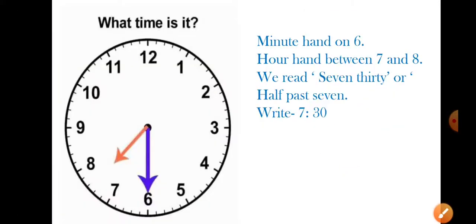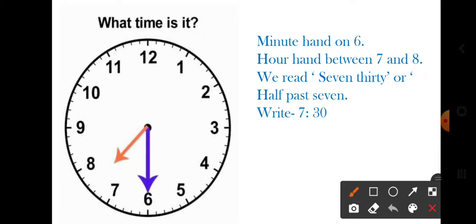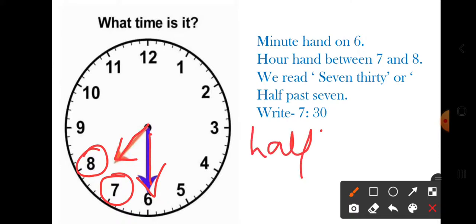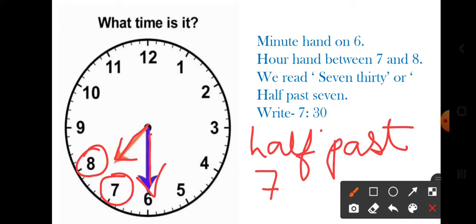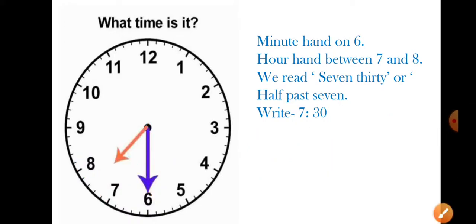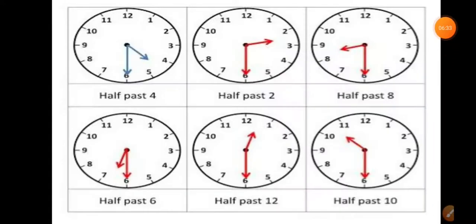Now, what time is it here? The minute hand is on six and the hour hand is in between seven and eight. So we read it as seven thirty or half past seven. We can write it as seven thirty or also as half past seven — those are the two ways how the time is written.